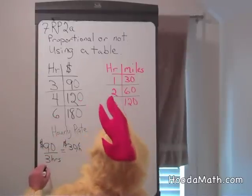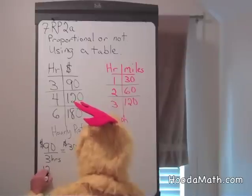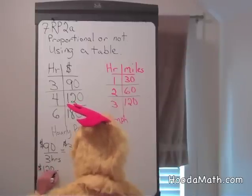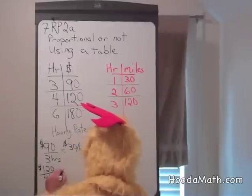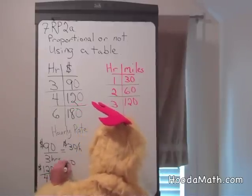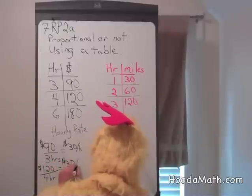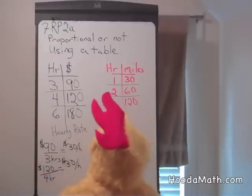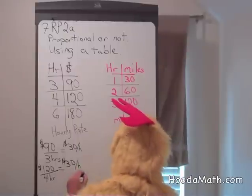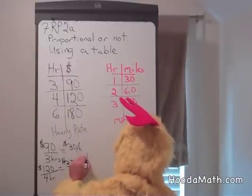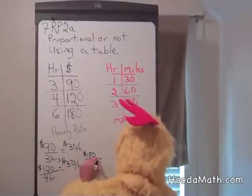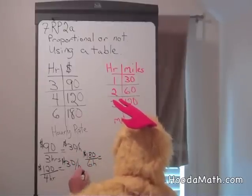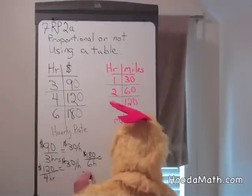If he works 4 hours, he makes $120 in 4 hours. If you divide, he makes $30 per hour. And finally, the last one: he makes $180 in 6 hours. If we divide, we find out he makes $30 per hour.